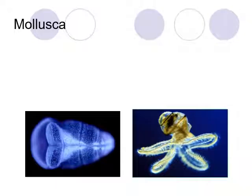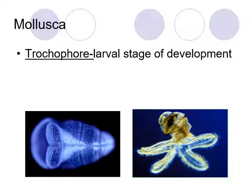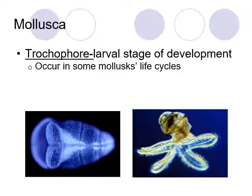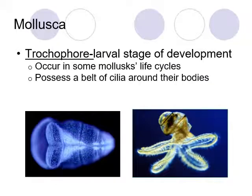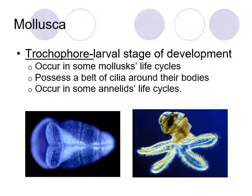We were able to get a more complex digestive system and circulatory system because we have this internal space where organs can form. All of the animal phyla that evolve after the mollusks are going to have this true body cavity, the coelom. Many mollusks like snails and clams have a trochophore larva stage of development — you can see these small larvae of the snails and clams. They share characteristics like a belt of cilia that goes around their bodies, helping them move. This also occurs in some annelid life cycles.